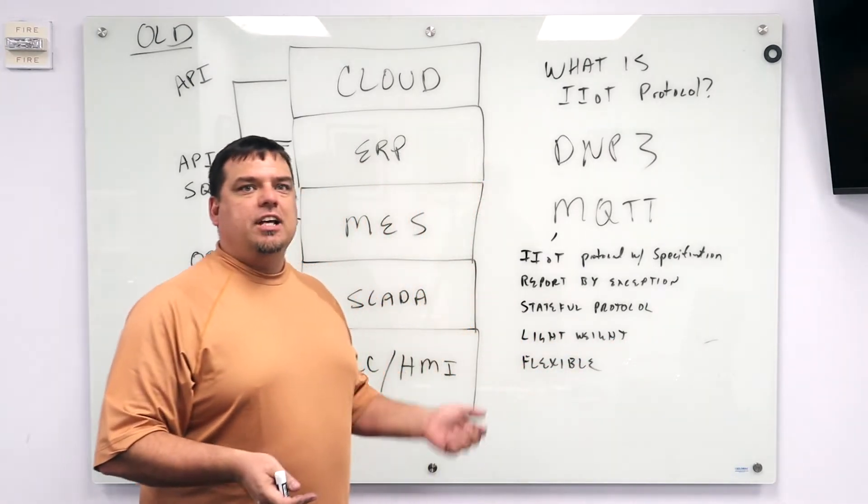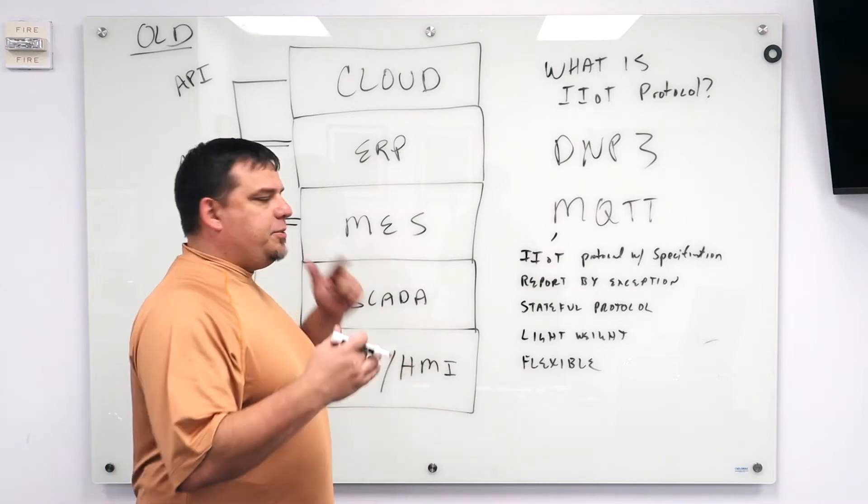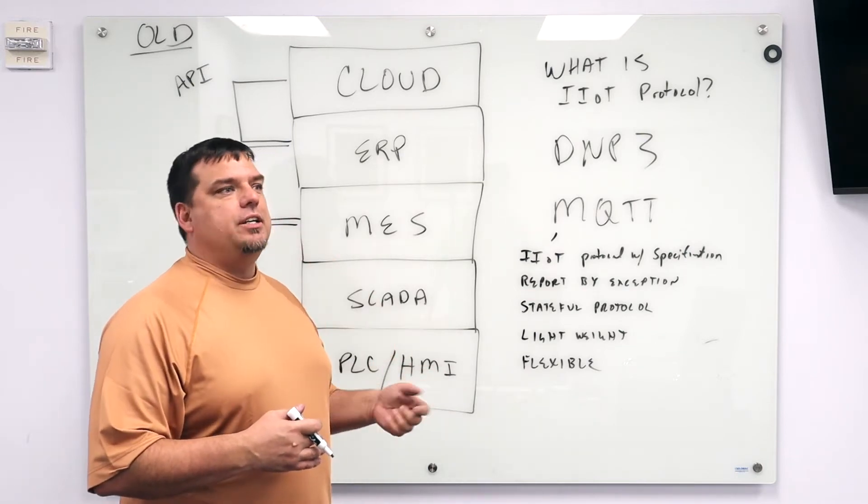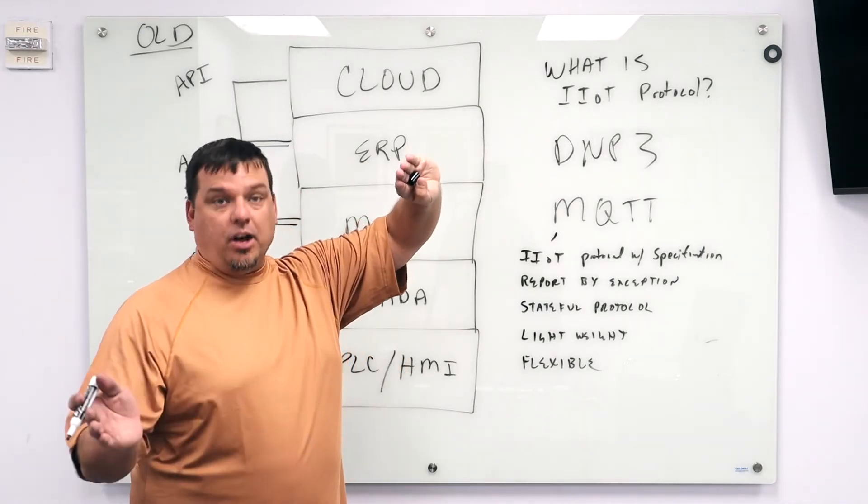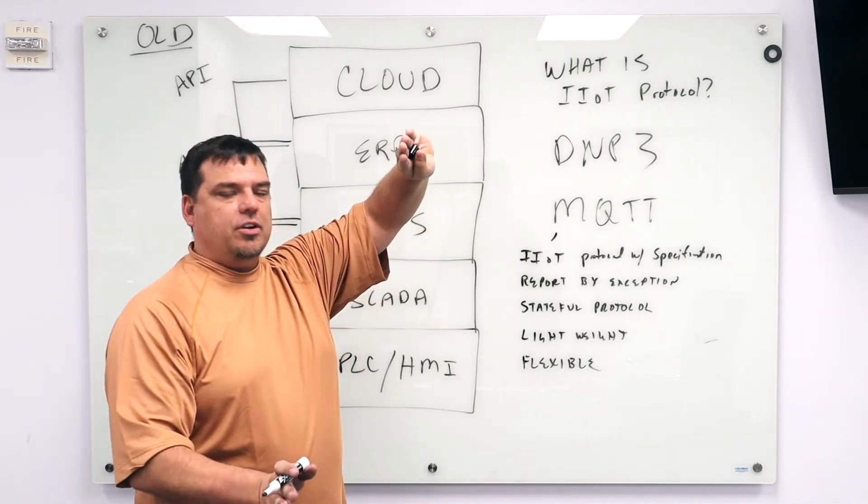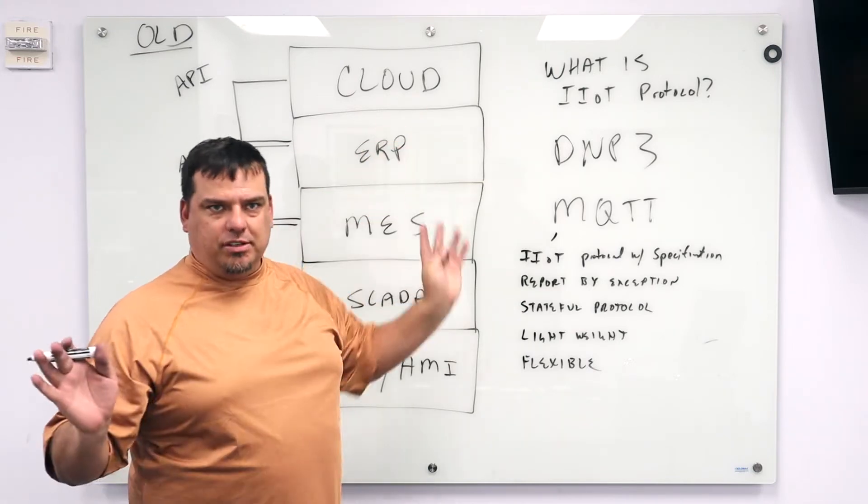You can go to the Eclipse Foundation. The Eclipse Foundation manages a specification called Spark Plug B. All the Spark Plug B specification tells you is how to connect something in the field to an MQTT server. We call them brokers. An MQTT server. And how do you format the data in the payload so that it can be organized at the server?